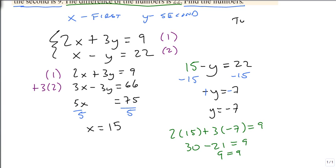So the two numbers are 15 and negative 7.